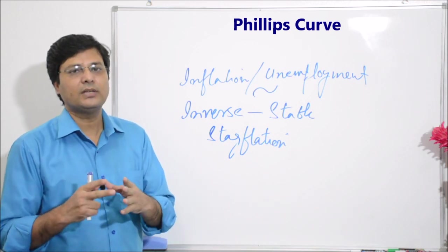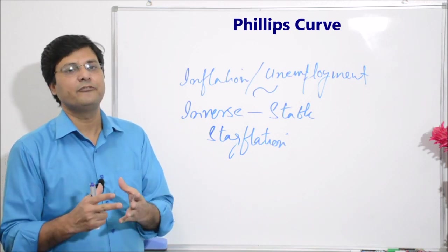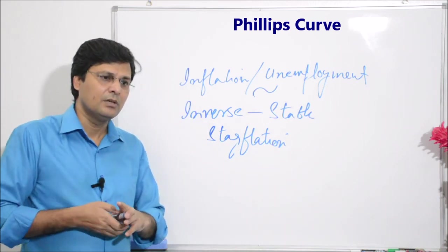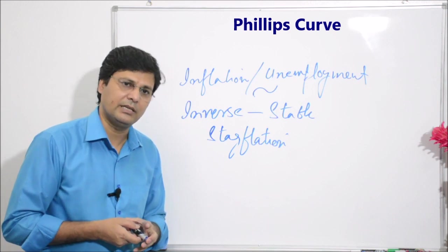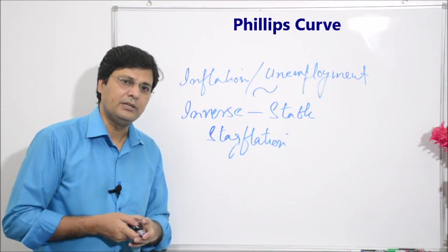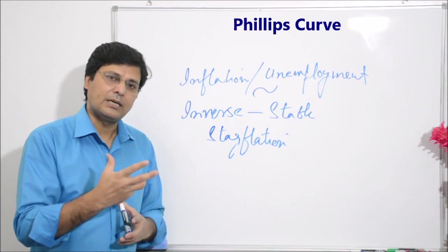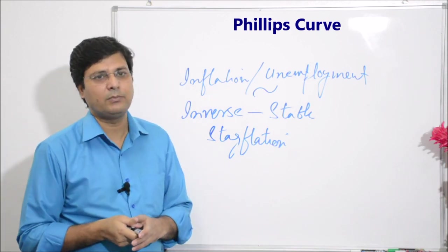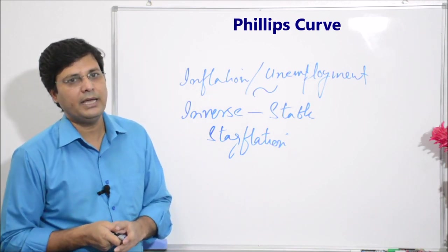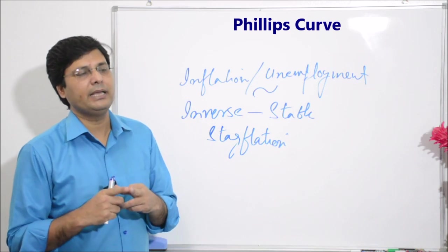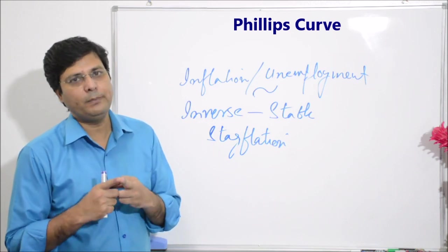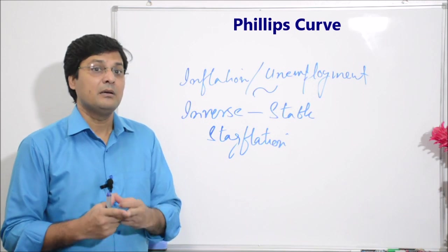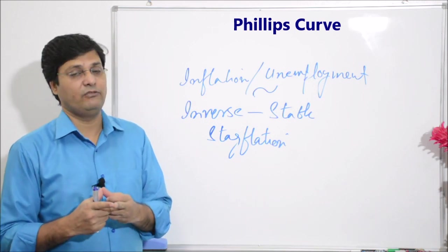At that time, the Phillips Curve was considered a failure. We will study how this works. The concept from the 1950s and 60s is about unemployment having a predictable effect. We will see how we can observe inflation through this.